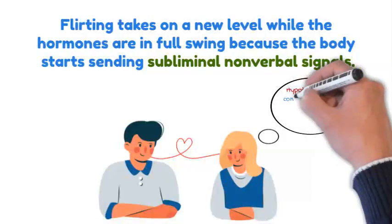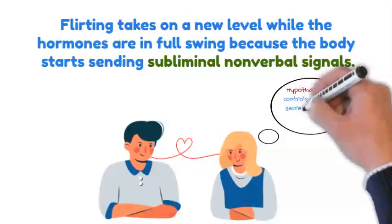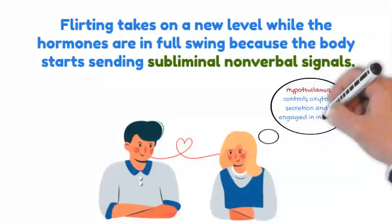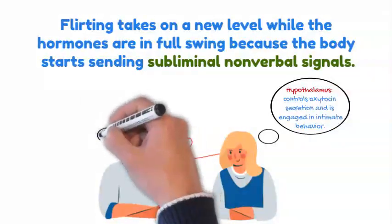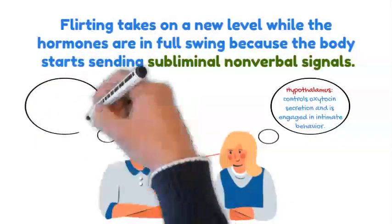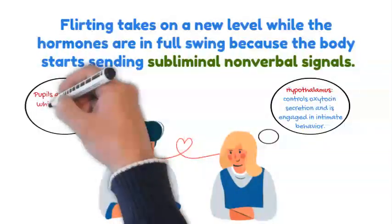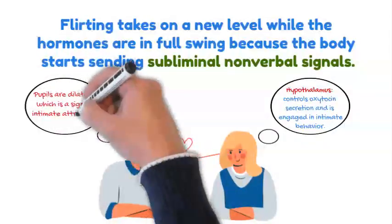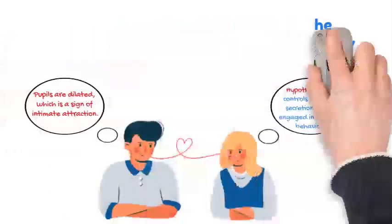hypothalamus, which controls oxytocin secretion and is engaged in intimate behavior. And if you keep eye contact with your date, you can see that their pupils are dilated, which is a sign of intimate attraction. Yay for you!